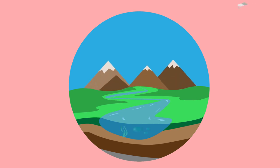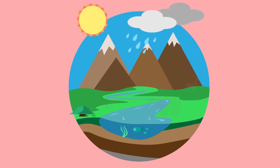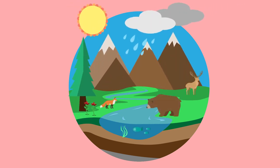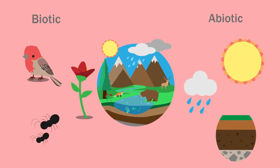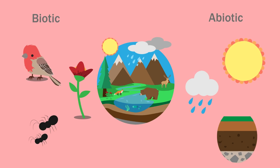Ecosystems are large, often highly complex areas of our environment. In today's video, we will be discussing some of this complexity as it relates to how different aspects of an ecosystem interact with one another. As we discussed in a previous video on ecosystem components, ecosystems are composed of both biotic or living and abiotic or non-living components. Let's start by discussing the abiotic parts of an ecosystem.